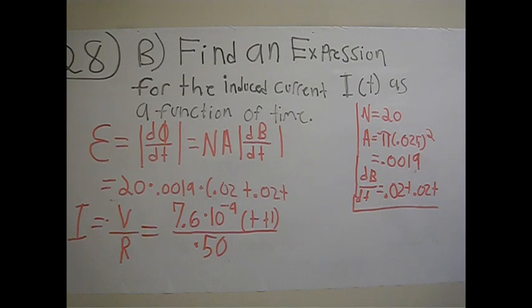And dB/dt, which is 0.02 plus 0.02t. Plugging that in, we get 20 times 0.0019 times (0.02 plus 0.02t).